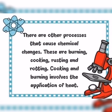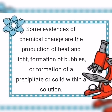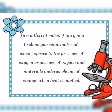There are other processes that cause chemical changes. These are burning, cooking, rusting, and rotting. Cooking and burning involve the application of heat, causing materials to change in their state and composition. When this happens, new substances and different properties or products are formed. Some evidences of chemical change are the production of heat and light, formation of bubbles, or formation of a precipitate or solid within a solution. In a different video, I am going to show you some materials when exposed to the presence or absence of oxygen, and materials that undergo chemical change when heat is applied.